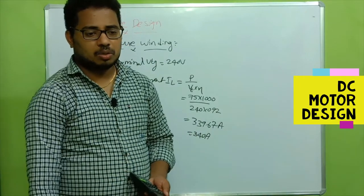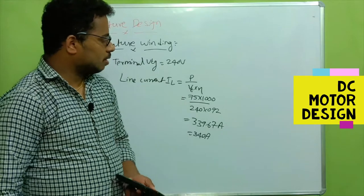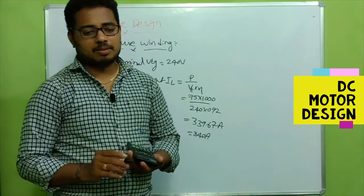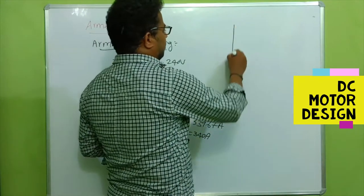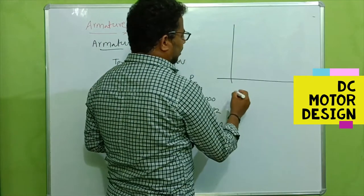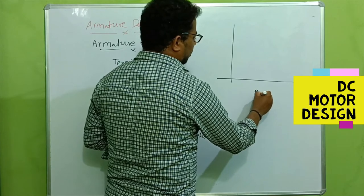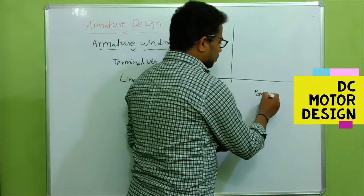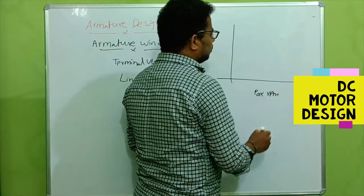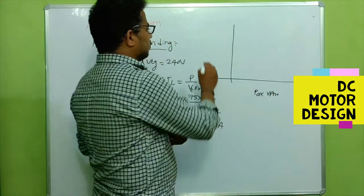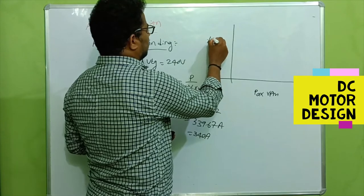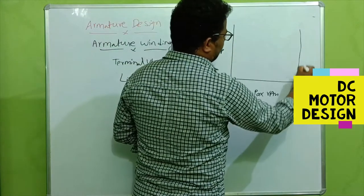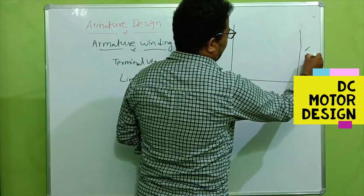We have a graph here. One axis shows percentage voltage drop and the other axis shows percentage field current. Using the product of armature power and RPM, we can read off the required values from this logarithmic graph.